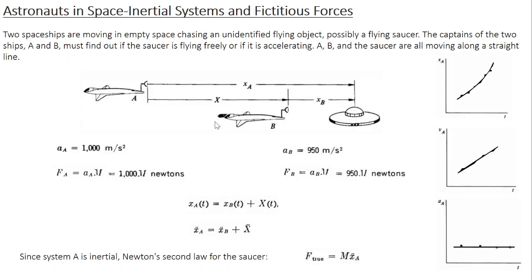We can write down the relation between these three different position vectors. I have the position vector of the object with respect to A and with respect to B. Similarly, the relative separation between the two spaceships, which I call X. From this, X_A(t) = X_B(t) + X(t). Taking the second derivative — a dot denotes a time derivative, so a double dot is a second-order derivative — X_A double dot equals X_B double dot plus X double dot.